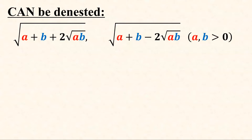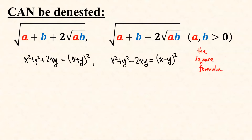What is so special about these nested radicals is that we can apply the famous factorization formula to them, namely the square formula. In our nested radicals, we can think of them with square root of a being x and square root of b being y.